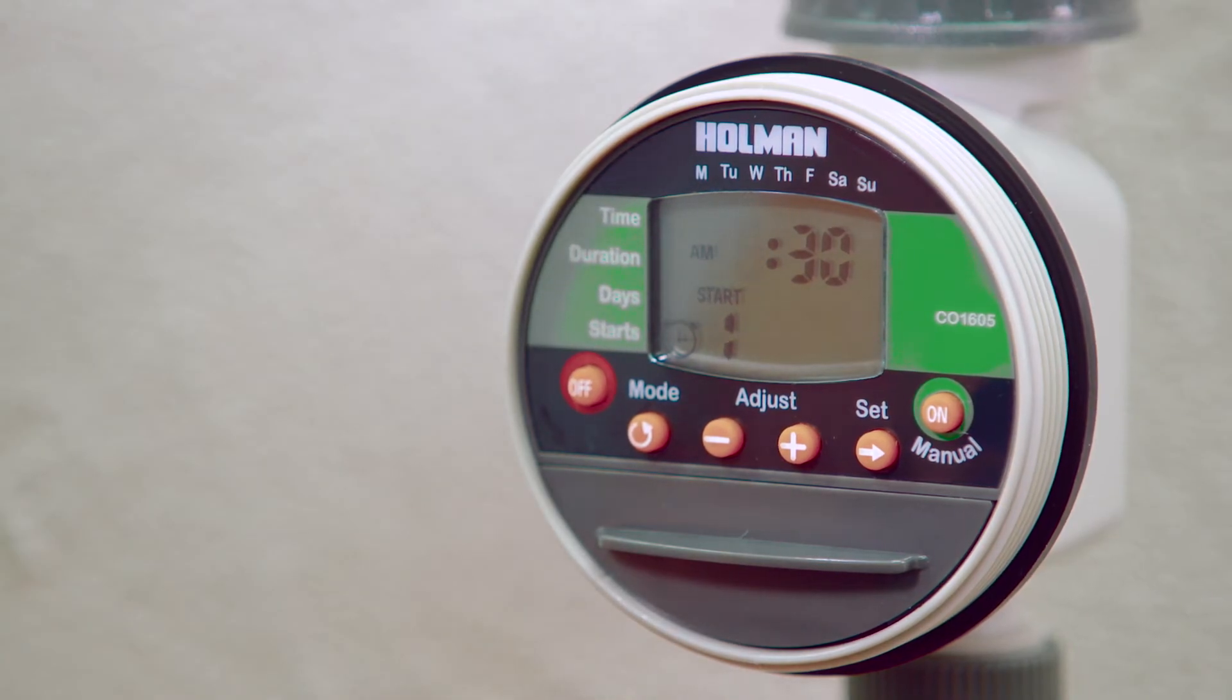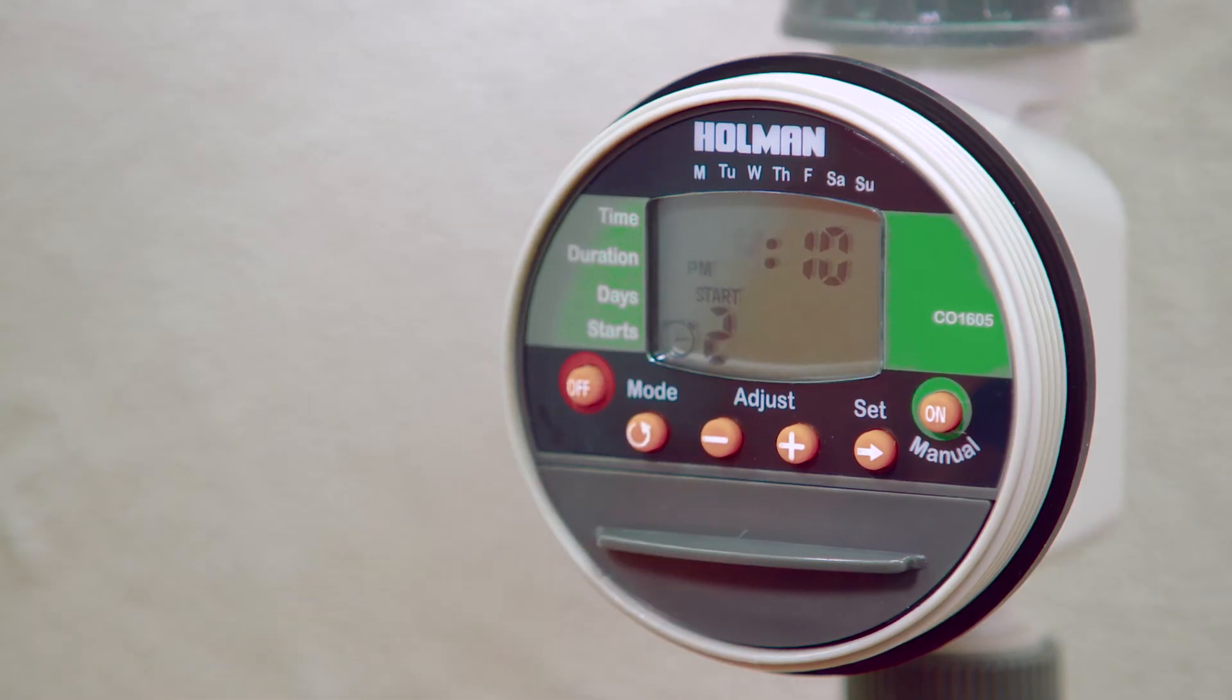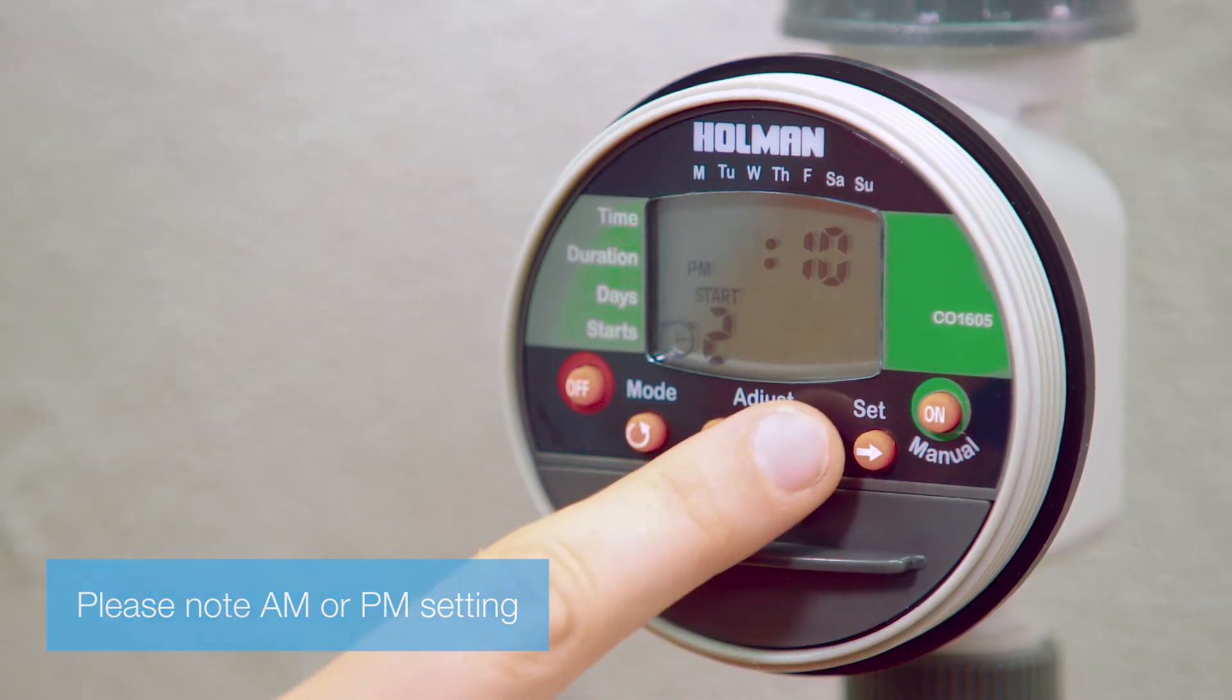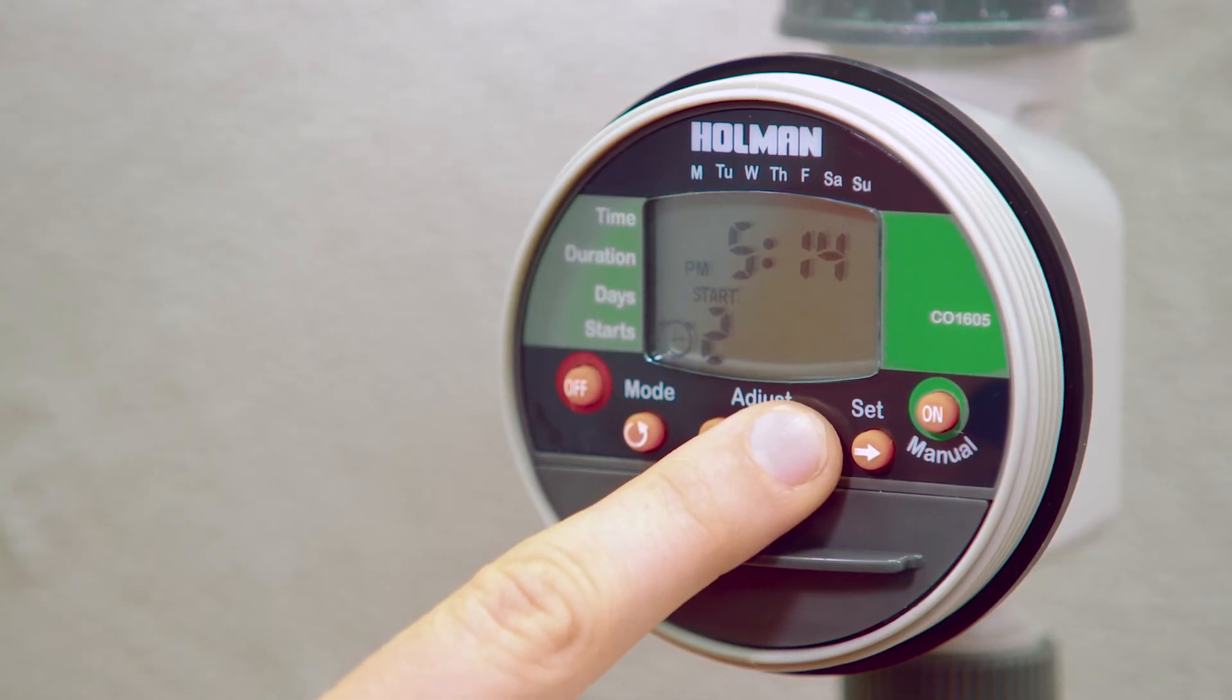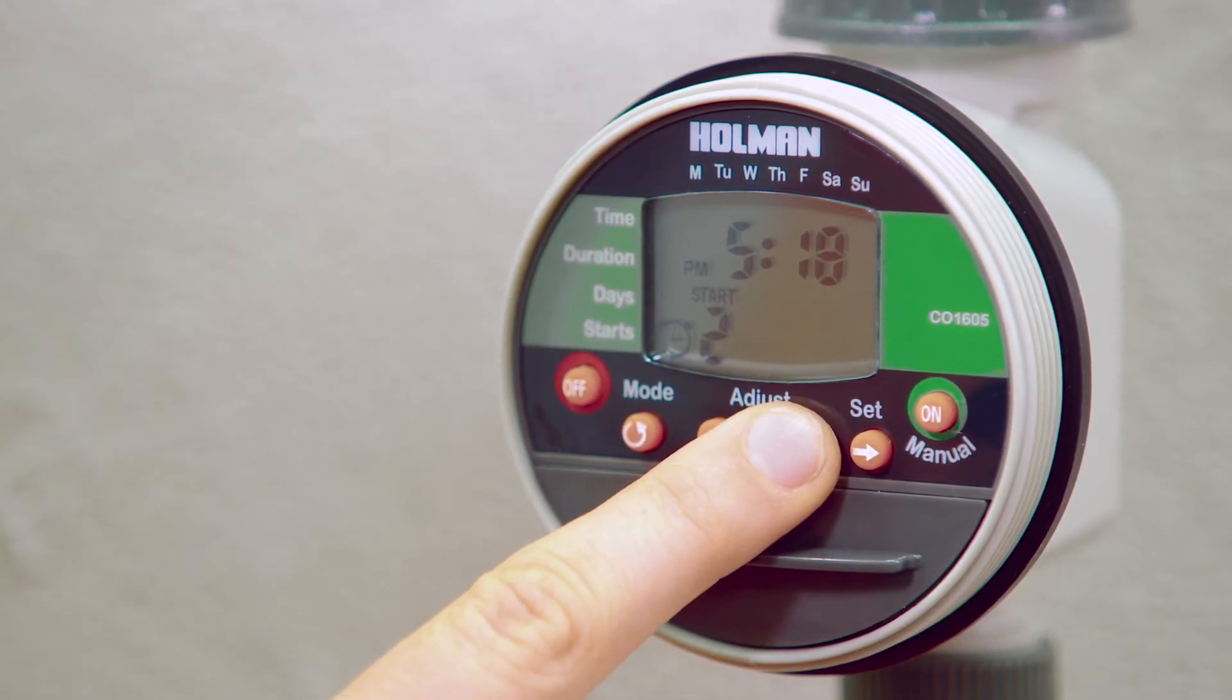If you want to water two times a day, use start one and two only. Three and four must remain off. Press mode to program the watering start times. The hour will be flashing. Adjust using the plus or minus button. Press set to switch to minutes. Repeat this process to set each start time.